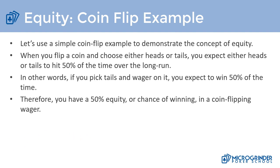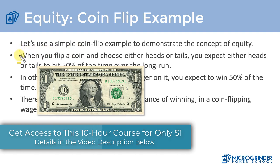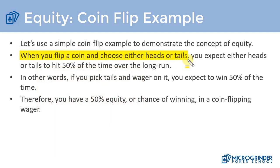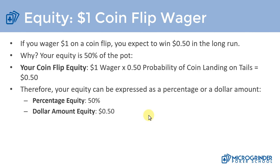Let's talk about equity from the perspective of a coin flip example. When you flip a coin, it's either going to land on heads or tails. Mathematically and statistically, we expect it to land on heads or tails 50 percent of the time over the long run — so if we flip the coin a million times, we'd expect heads 50 percent and tails 50 percent. We can wager a certain amount on it and look at our percentage equity.